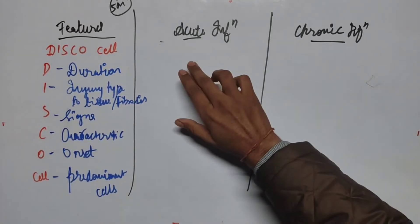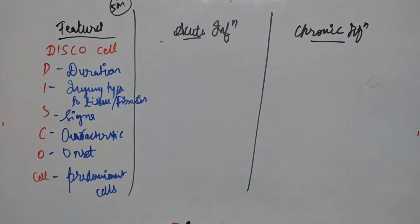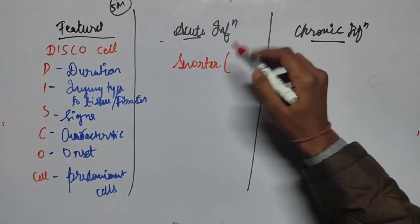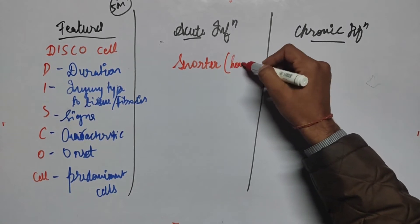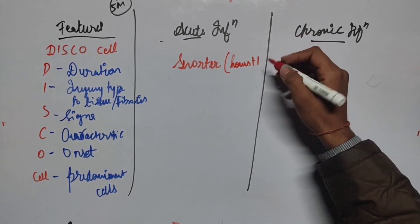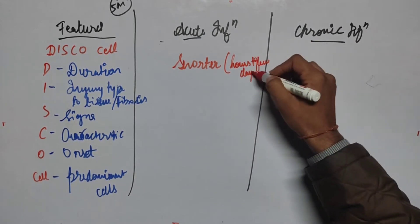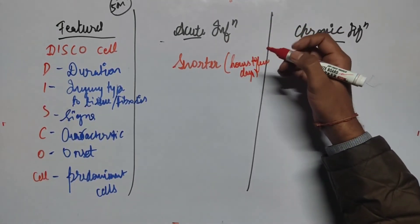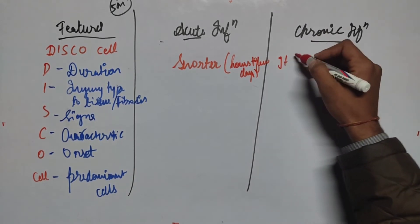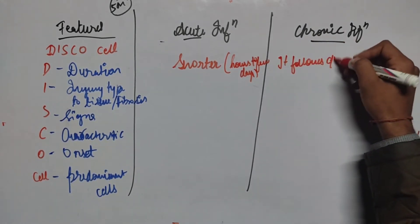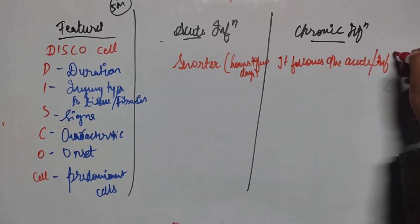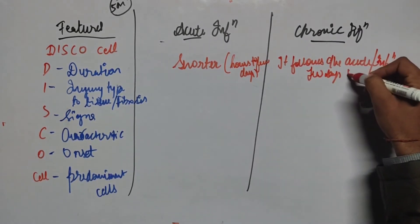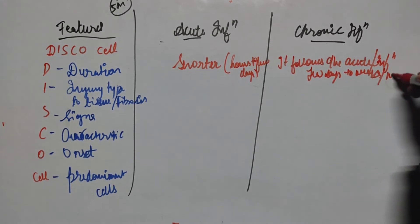Starting with Duration: acute inflammation is of shorter duration, lasting hours to a few days. Chronic inflammation follows the acute inflammation and takes a longer time — from a few days to weeks or even months.